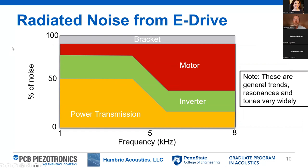Here is a high-level breakdown of where the noise is coming from in an eDrive. Starting at 1 kHz and going up to 8 kHz: power transmission — gearboxes — tends to dominate below around 5 kHz. The inverter and motor tend to dominate above 5 kHz, probably above 8 kHz as well, with the inverter likely being the stronger source in that range.